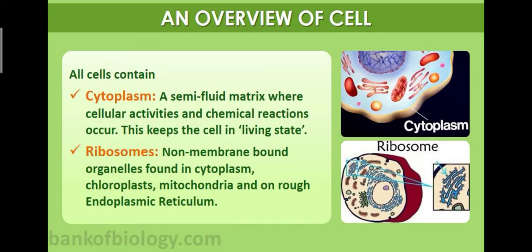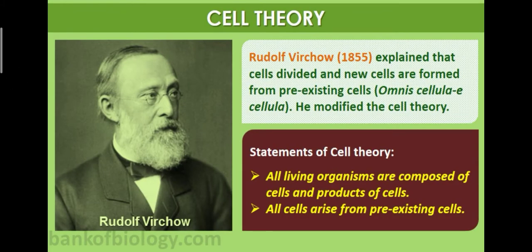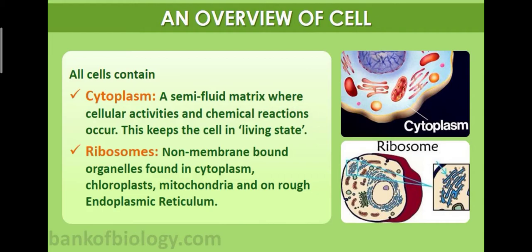Now an overview of a cell. The cell contains cytoplasm and ribosomes. The cytoplasm is a semi-fluid matrix where all cellular activities and chemical reactions occur — this keeps the cell in a living state. The cytoplasm is a semi-fluid liquid in which all cellular activities take place.